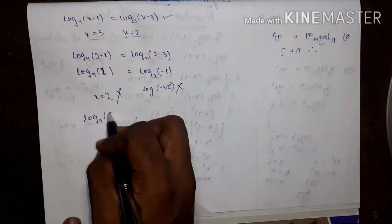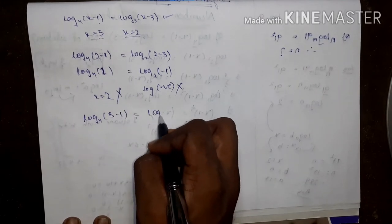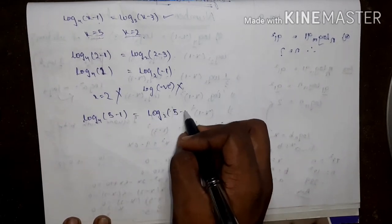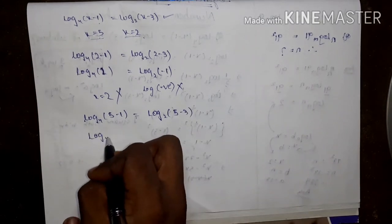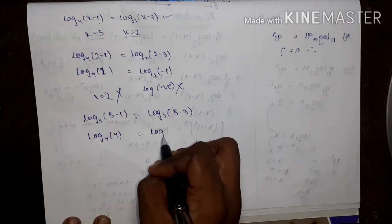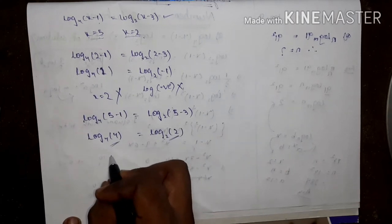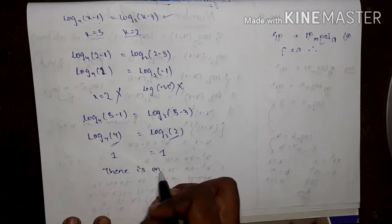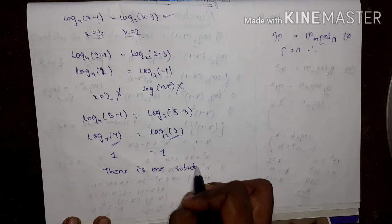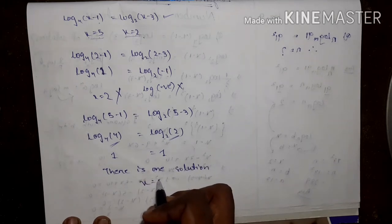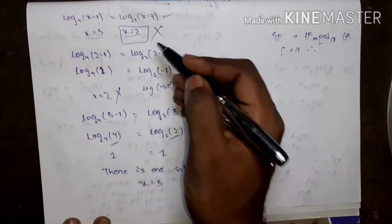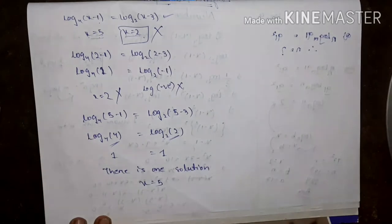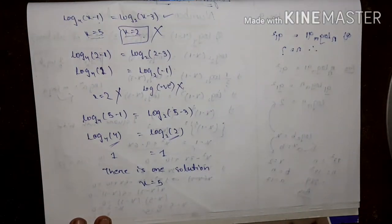Then put x equals 5: log_4(5-1) equals log_2(5-3), giving log_4(4) equals log_2(2), which equals 1 equals 1. This is satisfied. So there is only one solution, and the number of solutions is 1 — that is x equals 5, because x equals 2 does not satisfy the equation.